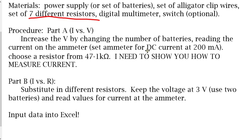is the multimeter set for DC current, at 200 milliamps. That'll be the setting, and you'll need to change the resistor from anywhere from 47 to 1000 ohms. I will show